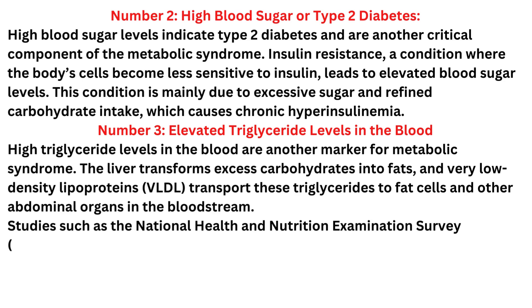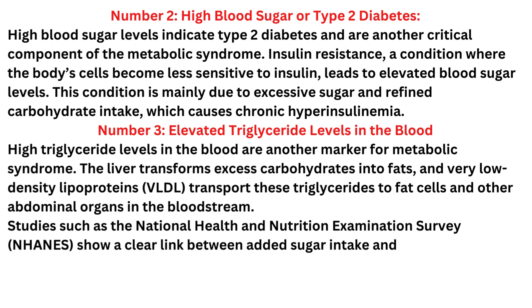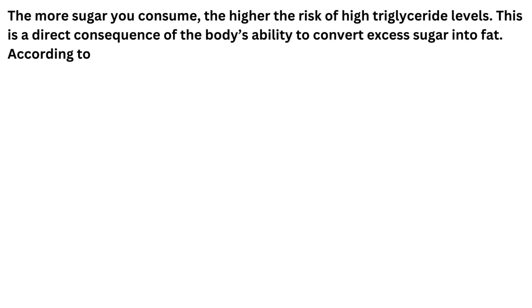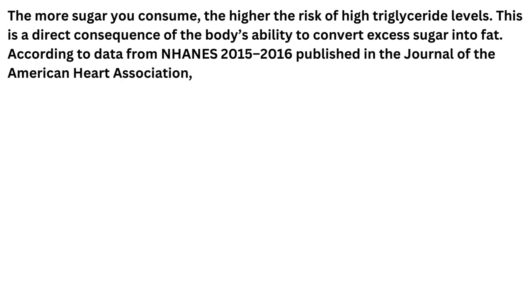Number three: elevated triglyceride levels in the blood. High triglyceride levels are another marker for metabolic syndrome. The liver transforms excess carbohydrates into fats, and very low-density lipoproteins (VLDL) transport these triglycerides to fat cells and other abdominal organs in the bloodstream. Studies such as the National Health and Nutrition Examination Survey (NHANES) show a clear link between added sugar intake and elevated triglyceride levels. The more sugar you consume, the higher the risk of high triglyceride levels — a direct consequence of the body's ability to convert excess sugar into fat.